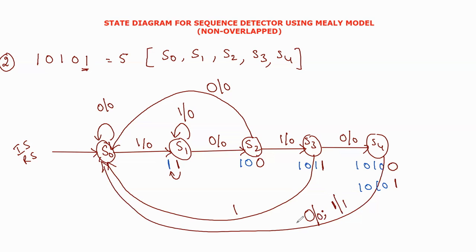This is the state diagram. If you read the state diagram and convert it to a next state table, it is very easy to develop the circuit diagram. If you practice it, in the next video you can read more models. Thank you.